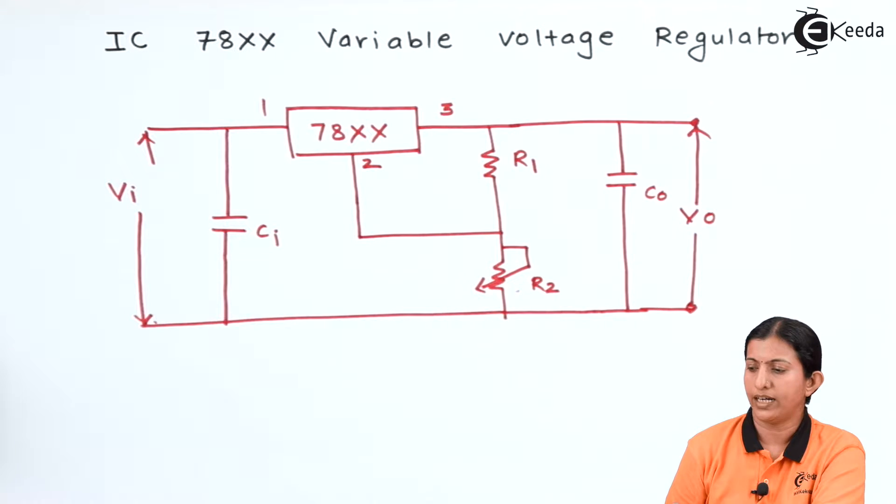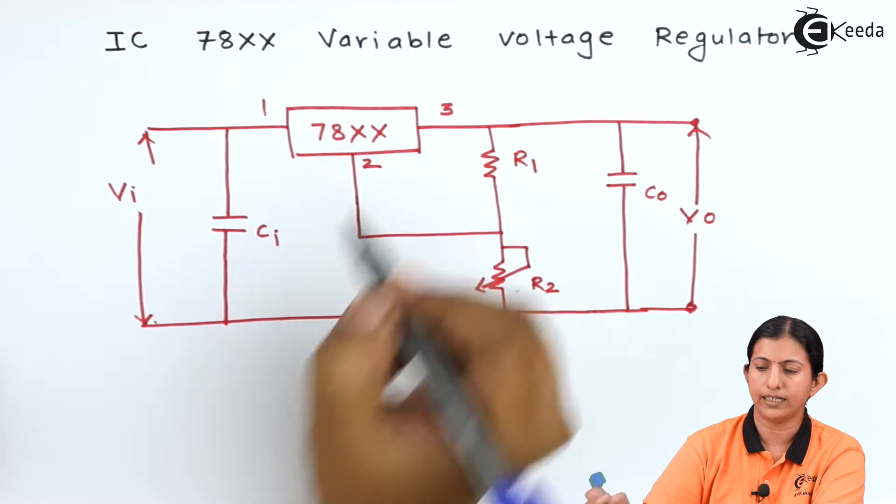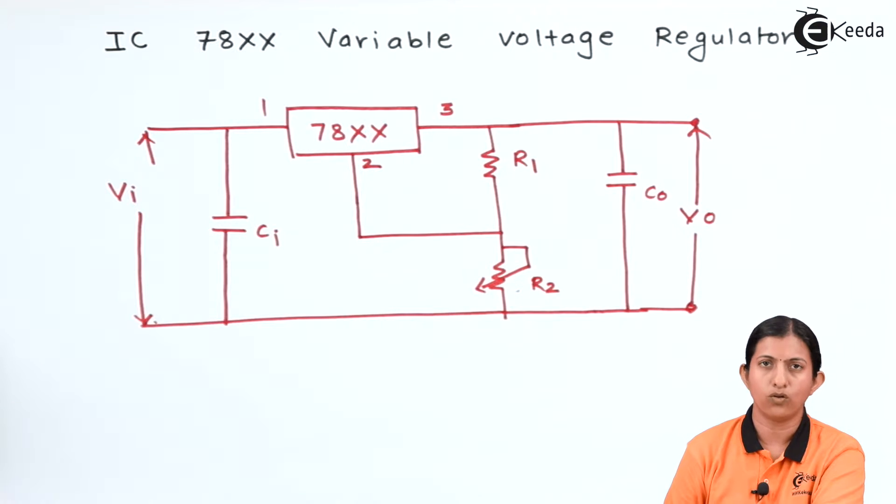This is the diagram for IC78XX voltage regulator. It consists of a 3-pin IC where 78 indicates positive value of the voltage and XX indicates the magnitude of the output voltage.